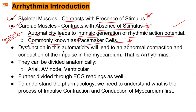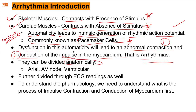Dysfunction in automaticity leads to abnormal contraction and conduction — two very important words. Contraction and conduction of the impulse in the myocardium being disturbed is arrhythmia. It can be divided anatomically — meaning where the abnormality takes place determines the type: atrial, AV node, and ventricular. These are the anatomic divisions of arrhythmias, further identified through ECG readings, for example QT prolongation.